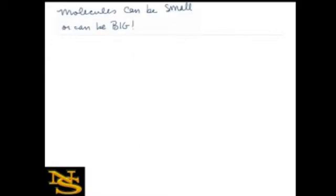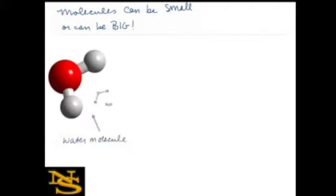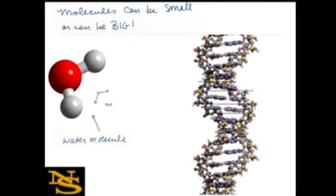So molecules can be big or small. They can be complex and they can be simple. So let's go back to that water molecule. Again, we have one oxygen and two hydrogens. This is a pretty simple molecule, but other molecules like DNA are very complex. You can see on the right-hand side of the screen all the different atoms that make up this tremendously complex molecule.